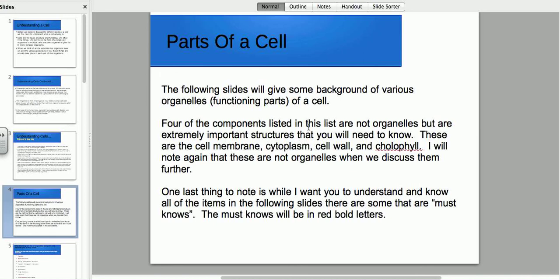The following slides are going to give you some background on various organelles or functioning parts of the cell. Because some of the things you're going to talk about that we're going to go over aren't just organelles, but they are functioning parts. They are important parts of that cell. Four of the components listed in this are not organelles, but are extremely important structures that you're going to need to know, like the cell membrane, the cytoplasm, the cell wall, and the chlorophyll. I'm going to note them again, that these are not organelles when we discuss them further.